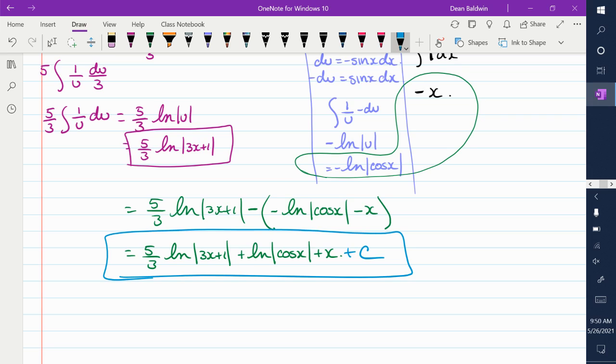Plus natural log absolute value cos of x plus x. And the final step, plus c. So when it's big like that, you break it into separate chunks and do each one separately and then bring it all back together. The only trick is watching your signs, especially if there's a subtraction sign in there.